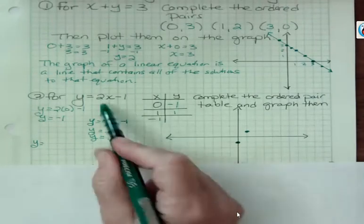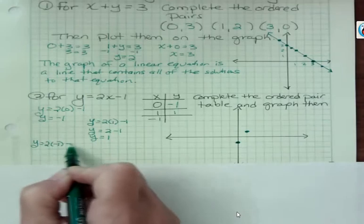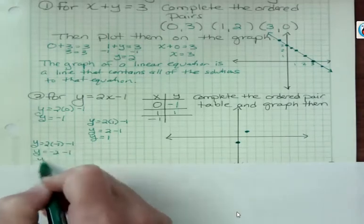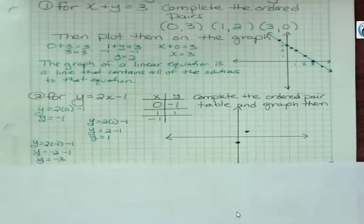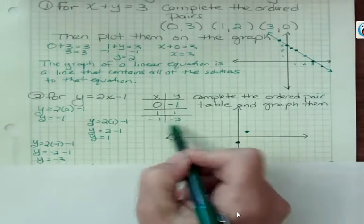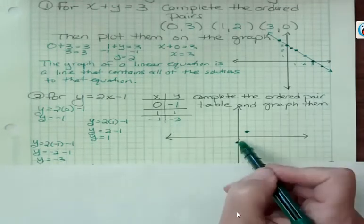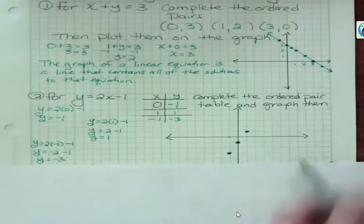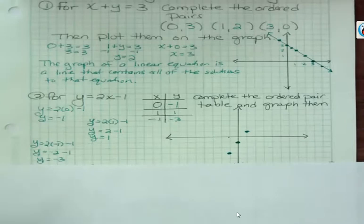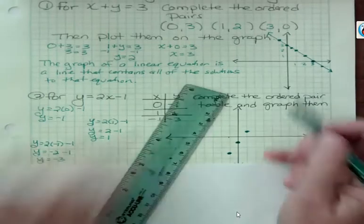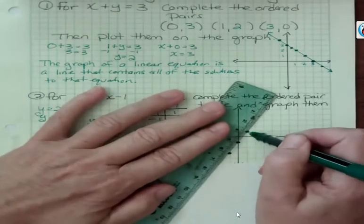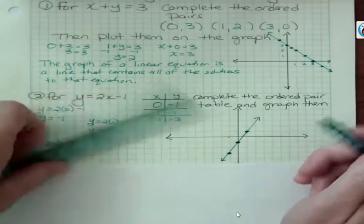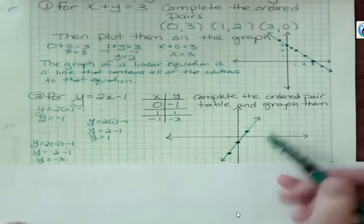So if x is negative 1, 2 times negative 1 is negative 2, and y is negative 3. So my point here is negative 1, negative 3. From the origin, negative 1 and negative 3. And now I can feel good about that, those did line up. Lined up, and then I can make a line going through the points, passing beyond the points, and putting arrows to suggest, these are the three points that I chose.